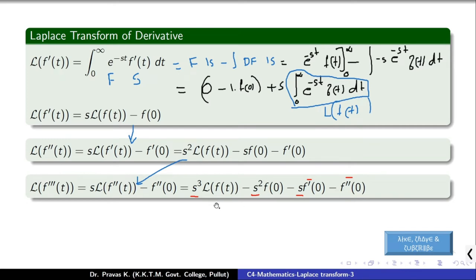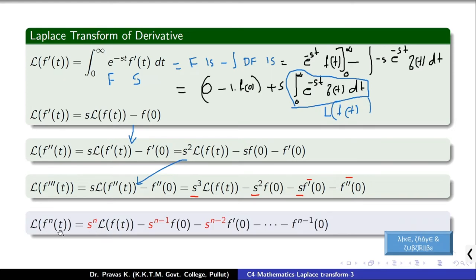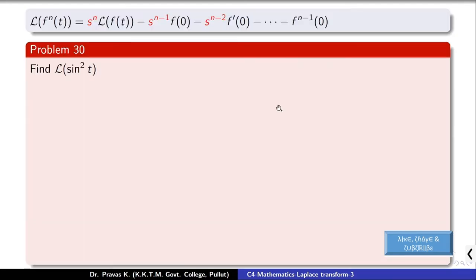Using this pattern, we can derive a generalized formula: the Laplace transform of the nth derivative of f(t) is s^n · L{f(t)} − s^(n−1) · f(0) − ... − f^(n−1)(0), where the powers of s decrease and the derivatives of f evaluated at 0 go up to the (n−1)th derivative.